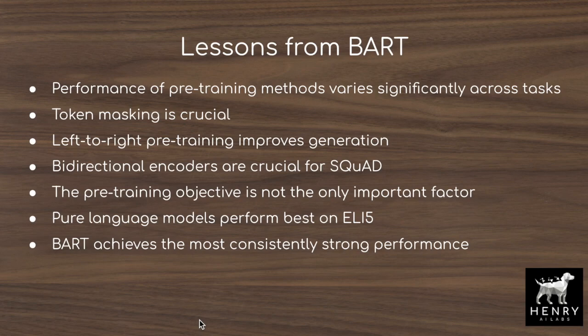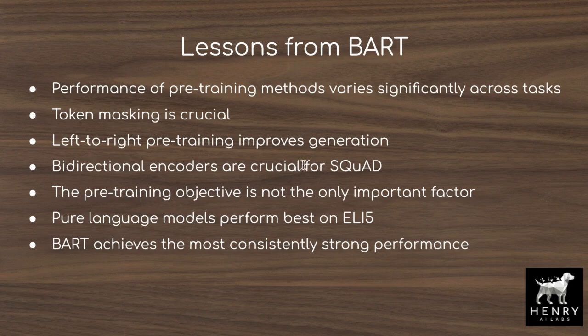The BART research paper has a list of lessons from their pre-training and architecture ablations. They find that performance of pre-training methods varies significantly across tasks — you won't have the same setup for the SuperGLUE benchmark as for an abstract question answering model. Token masking is a crucial pre-training objective. Left-to-right pre-training improves generation capability. Bidirectional encoders are crucial for SQuAD. And BART — combining bidirectional and autoregressive language modeling — achieves the most consistently strong performance overall.